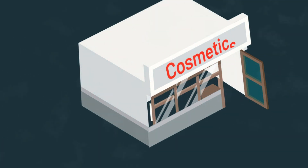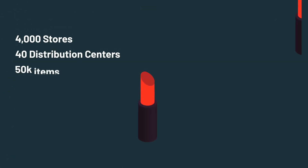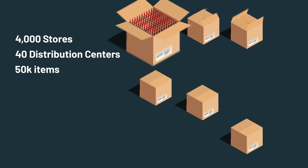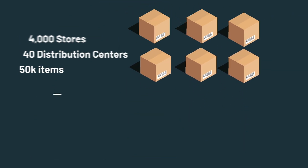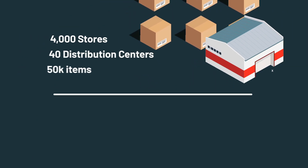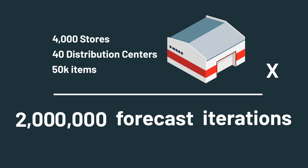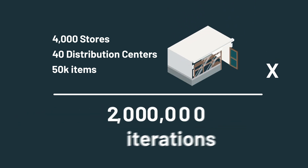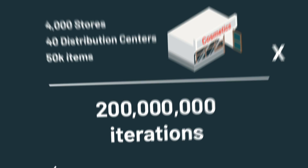Let's take, for example, a retailer with 4,000 stores, 40 distribution centers, and 50,000 items. Building item-level forecasts at the distribution center level requires 2 million forecast iterations. If we went to the store level, that number would jump to 200 million iterations.